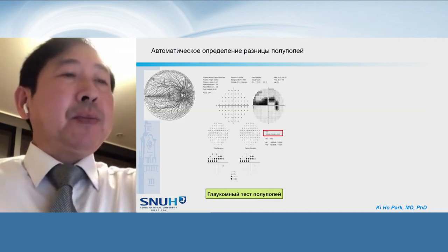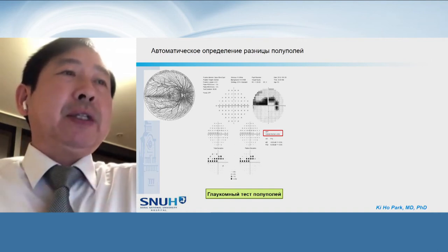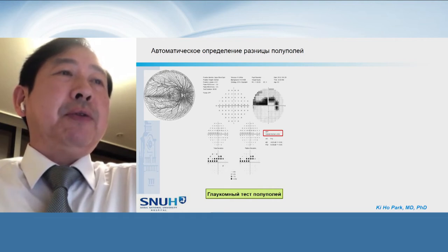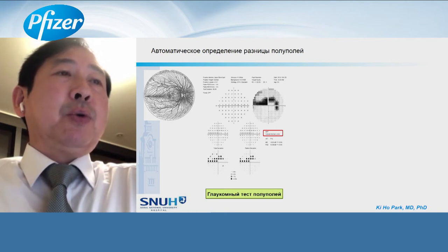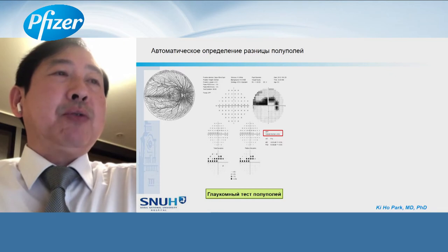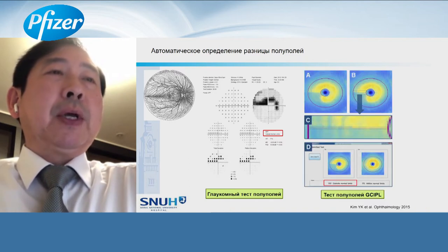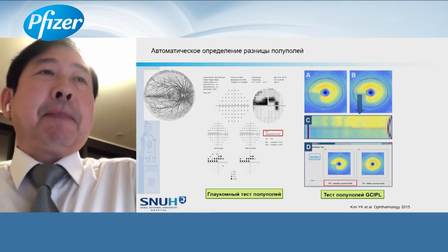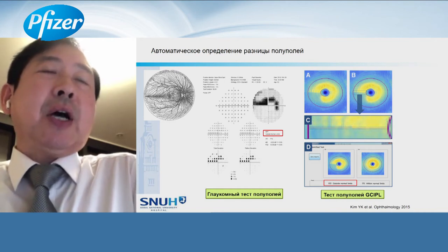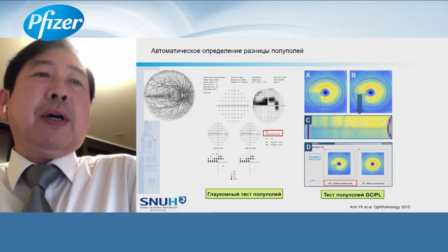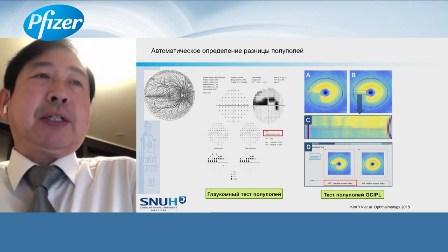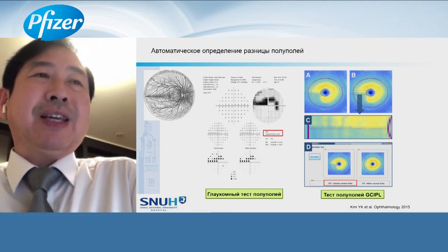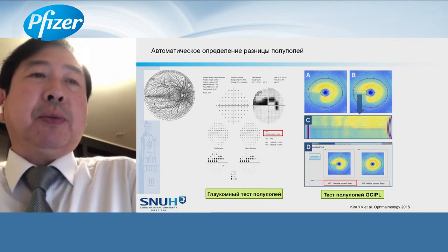In the visual field, we perform the glaucoma hemifield test, which compares the sensitivity of superior and inferior retina across the horizontal raphe. Similarly, we can perform the ganglion cell inner plexiform layer thickness difference between the horizontal raphe — we made our own custom software which performs a glaucoma GC-IPL hemifield test. In this case, there is a significant difference across the horizontal line in GC-IPL thickness, coming outside normal limits.